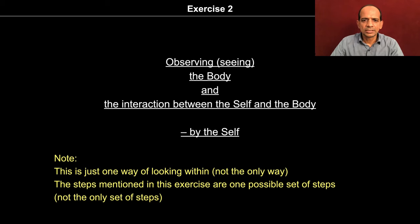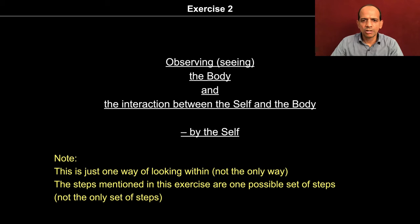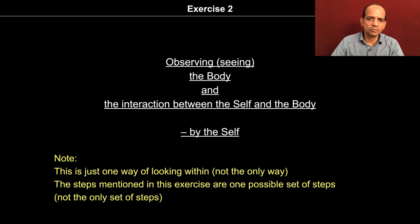Initially the self was the seer as well as the object of attention — that is the scene. Now we are going to observe the body and the interaction taking place between the self and the body. This is just one way of observing the reality and not the only way. The steps mentioned in this exercise are one possible set of steps, and this is again an open proposal for you to observe on your own and try to see the reality.